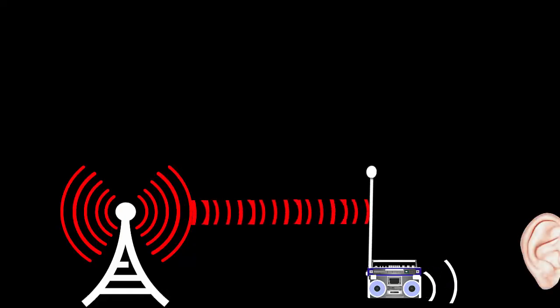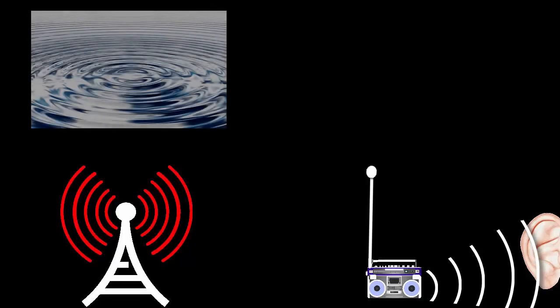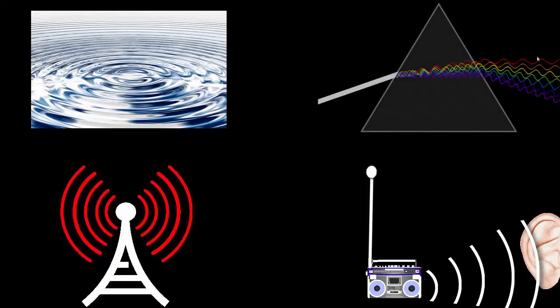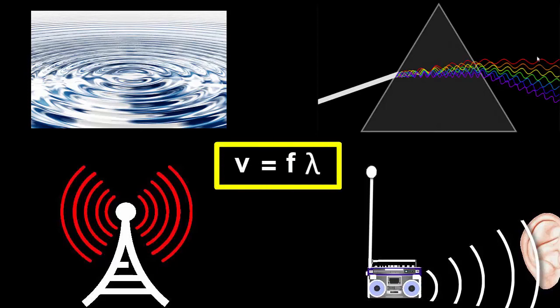Actually, we can't hear radio waves with our ears. Instead, we need them to be picked up by a radio antenna and convert them into sound waves, which our ears can hear. Radio waves, sound waves, water waves, light waves and microwaves all obey the wave equation. We'll show this in more depth in the next video.